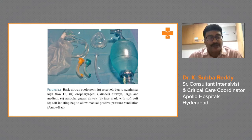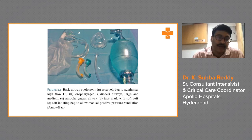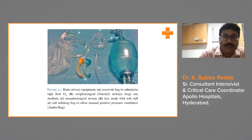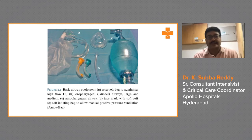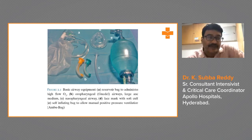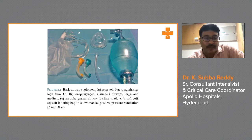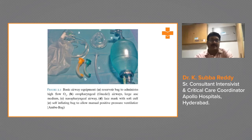These are the basic airway equipment. We have a reservoir bag to administer high-flow oxygen. We use the mask and bag, which is very common nowadays — we used it for a lot of COVID patients to give oxygenation. We have oropharyngeal airways in different sizes, color-coded — these are called Guedel's airways in large, medium, and small. We have the Lindus nasopharyngeal airway, a face mask with soft cuff, and a self-inflating bag to allow manual positive pressure ventilation — this is called the Ambu bag.